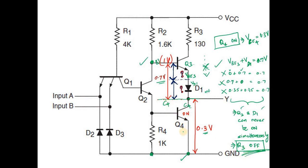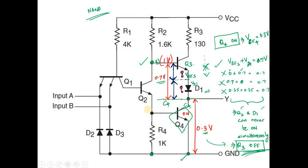Q3 and Q4 can never be simultaneously on. This satisfies the working of the NAND gate. That's all for the understanding of the circuit and working of the NAND gate with totem pole output.